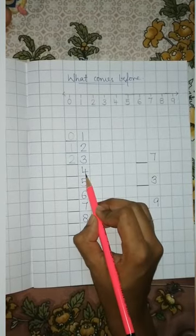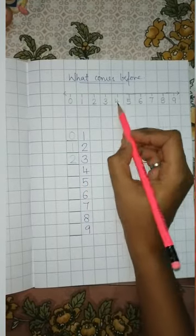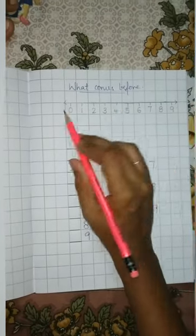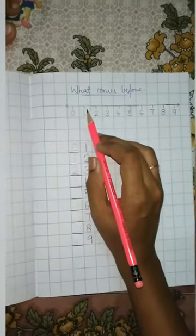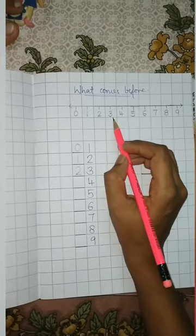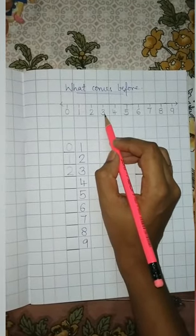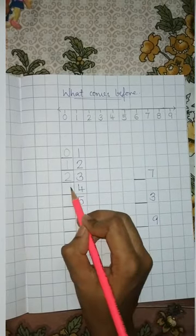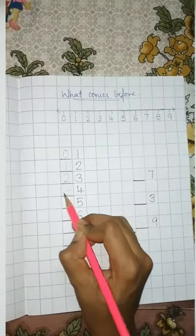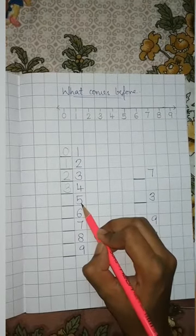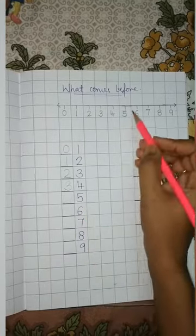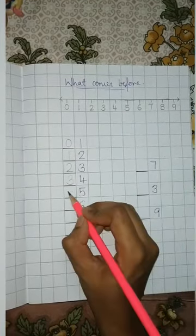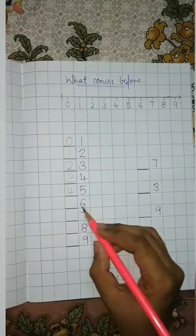This is number 4. Before number 4, you will go towards the left. So this is number 4, so before it is number 3. Now this is number 5. Before number 5 is number 4. Very good. So you will write number 4.